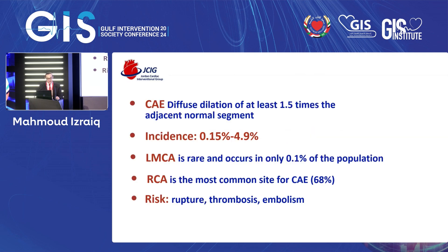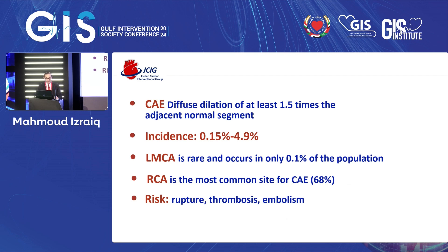Coronary ectasia is defined as diffuse dilatation of at least 1.5 times the adjacent normal segment, and is considered long or diffuse if it involves more than one third of the vessel. The incidence ranges from 0.1 to 4.9%. Left main coronary artery involvement is rare, occurring in only 0.1% of the population.